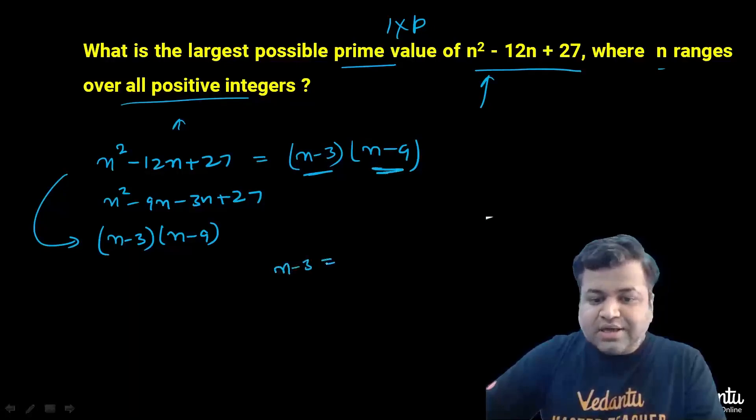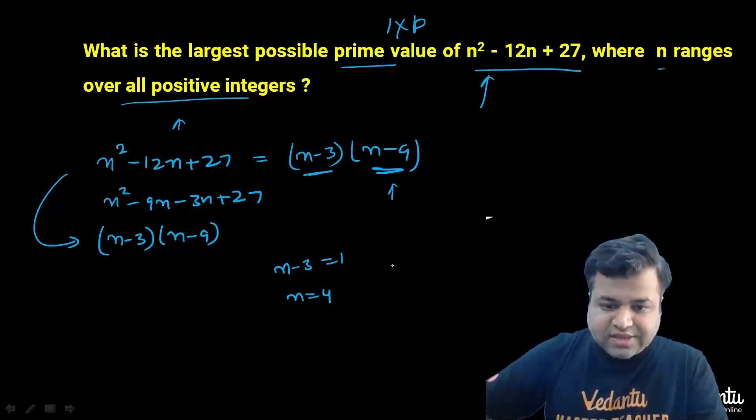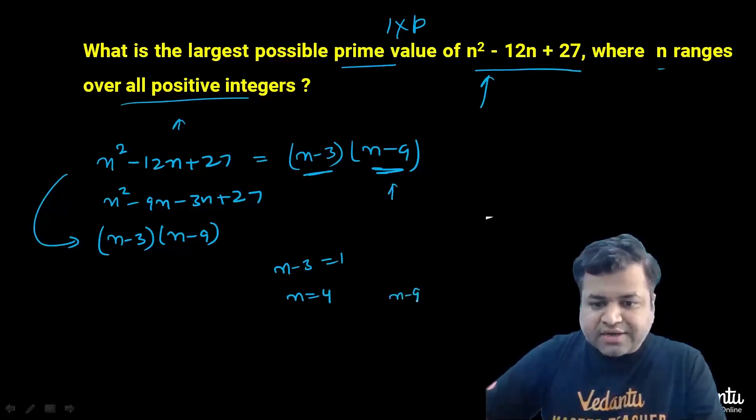So if n - 3 is supposed to be 1, we get n equals 4, and in that scenario what we will get is n - 9, that should be equal to -5, which is clearly not a prime. One criteria is this.